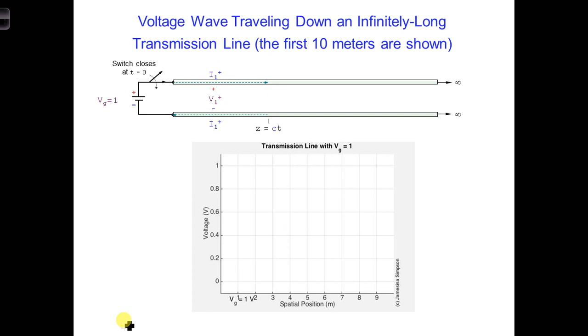I used a computer to solve the telegrapher's equations for this type of scenario. On the bottom of this slide, I have a video of the voltage versus time for this transmission line. Here I am assuming that Vg is equal to 1. At time T equals 0, the generator is connected to the lossless transmission line.